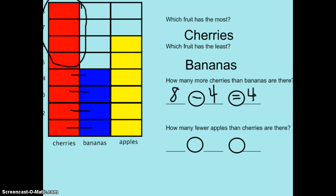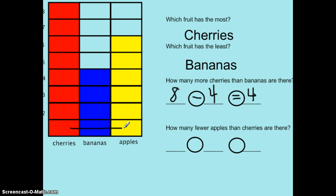For my next problem: how many fewer apples than cherries are there? Let's look at the graph the same way. This time I'm comparing apples to cherries. I'm going to look and see how they are the same. Cherries and apples both got one vote, both got two votes, both got three votes, both got four votes, both got five votes, both got six votes.